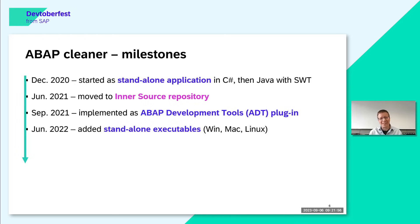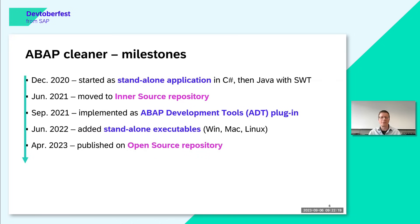That integration happened in September 2021, allowing us to roll out internally and gather feedback on bugs, issues, and new ideas. We also added standalone executables for colleagues who don't use ADT. Those use the clipboard approach, so you can use the tool with SAP GUI as well. Then ultimately in April 2023, the project was published on an open source repository.